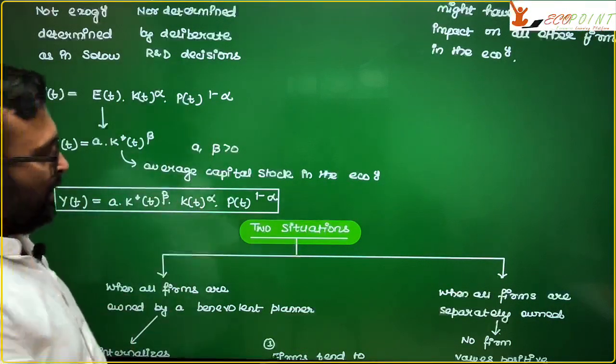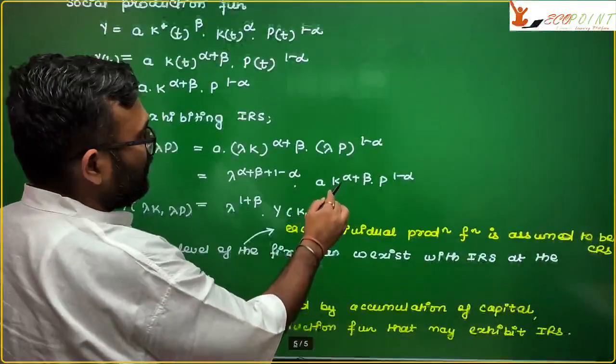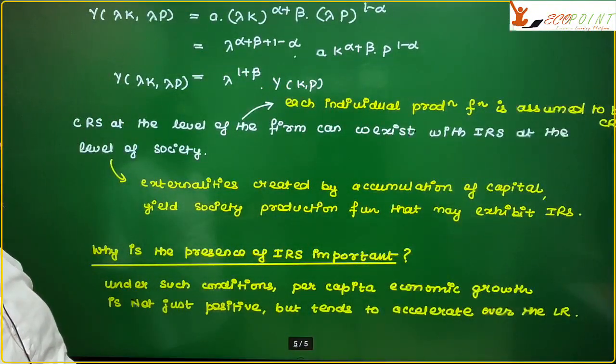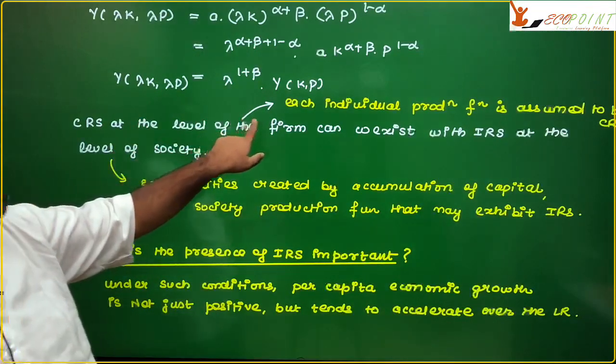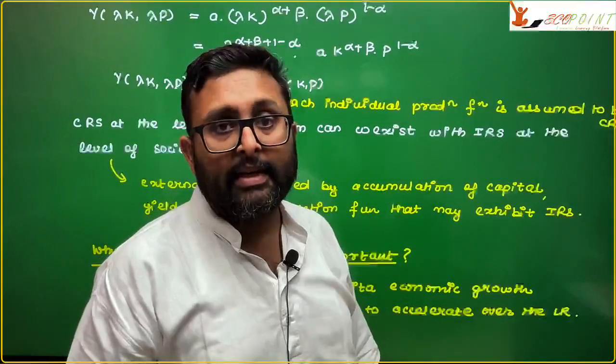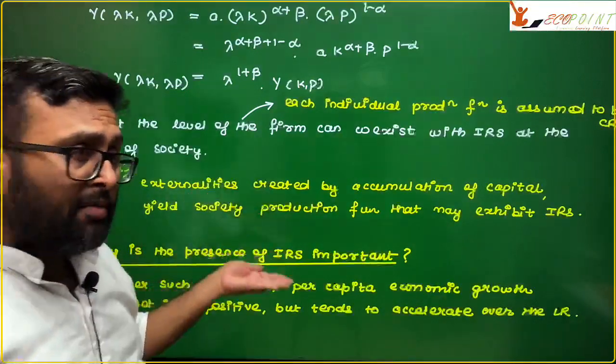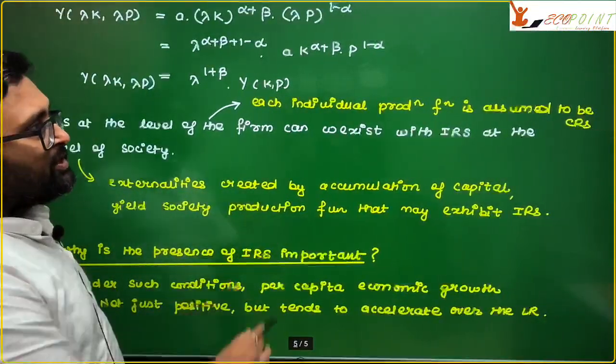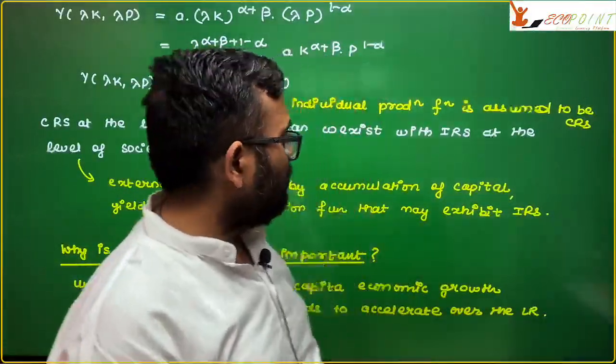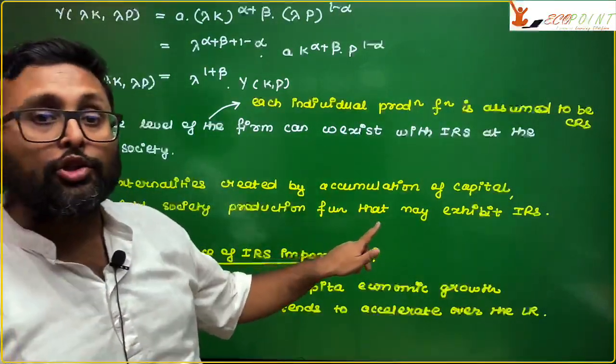This guy, which you have just written. This is for society. And you can see that society production function shows IRS, increasing returns to scale. The firm production function was assumed to be showing CRS. But society production function was showing IRS.